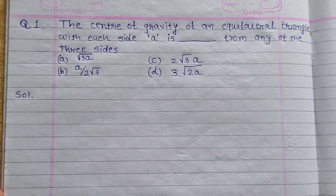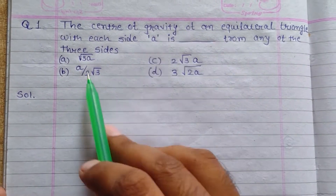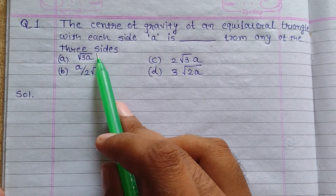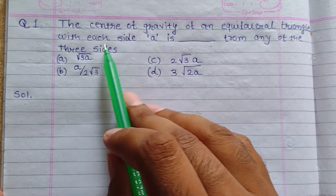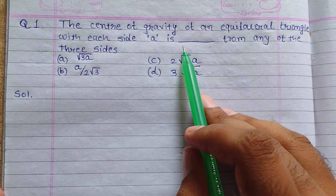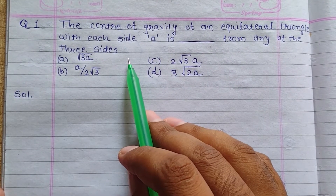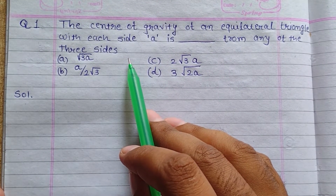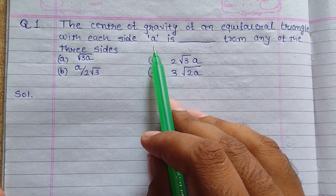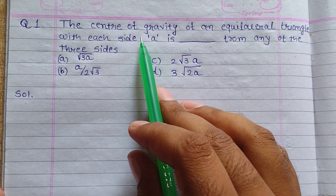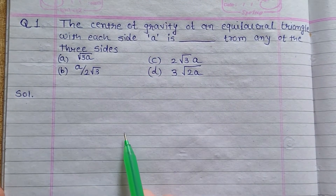So let's start with this video. The question is: the center of gravity of an equilateral triangle with each side 'a' is from any of the three sides. We have to find the center of gravity of the equilateral triangle in terms of 'a', one of its sides.